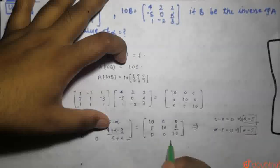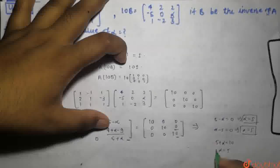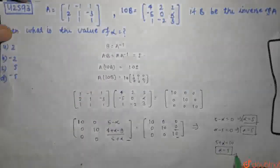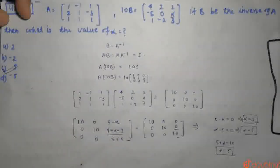And 5 plus alpha equals 10, confirming alpha is 5. So option C will be the correct answer. Thank you.